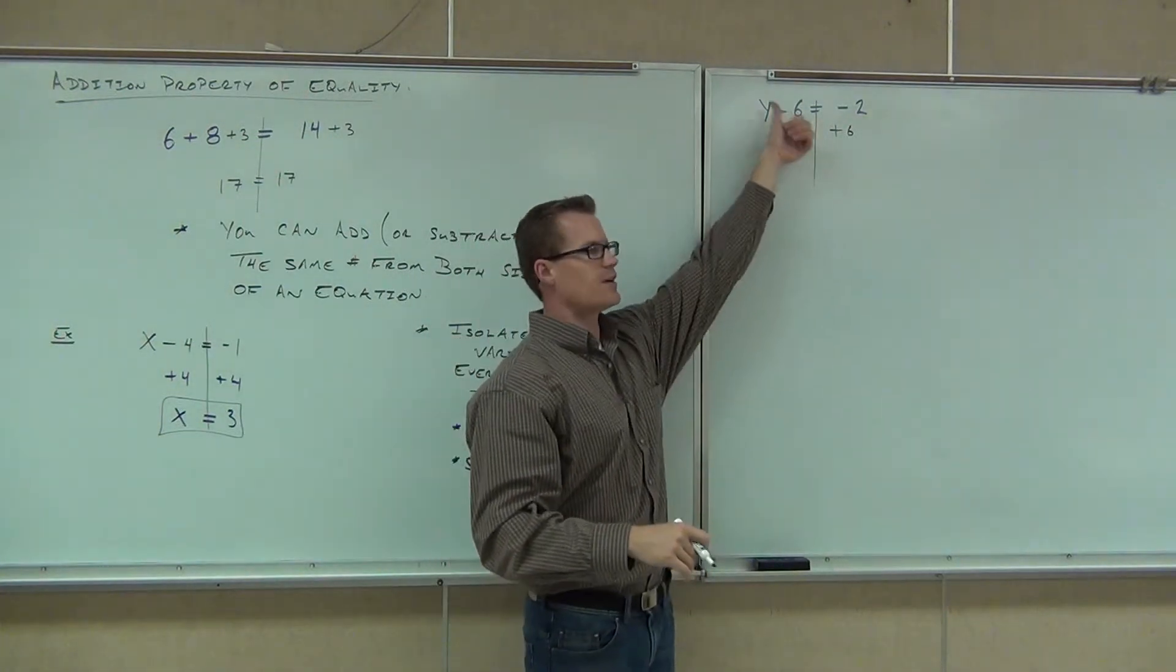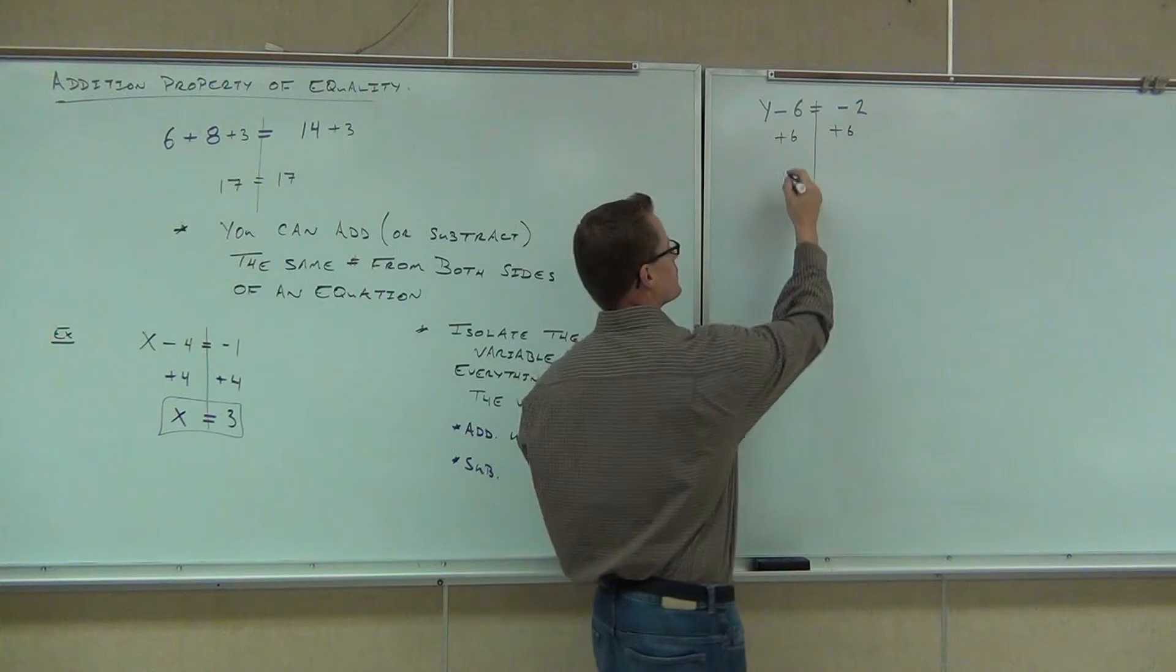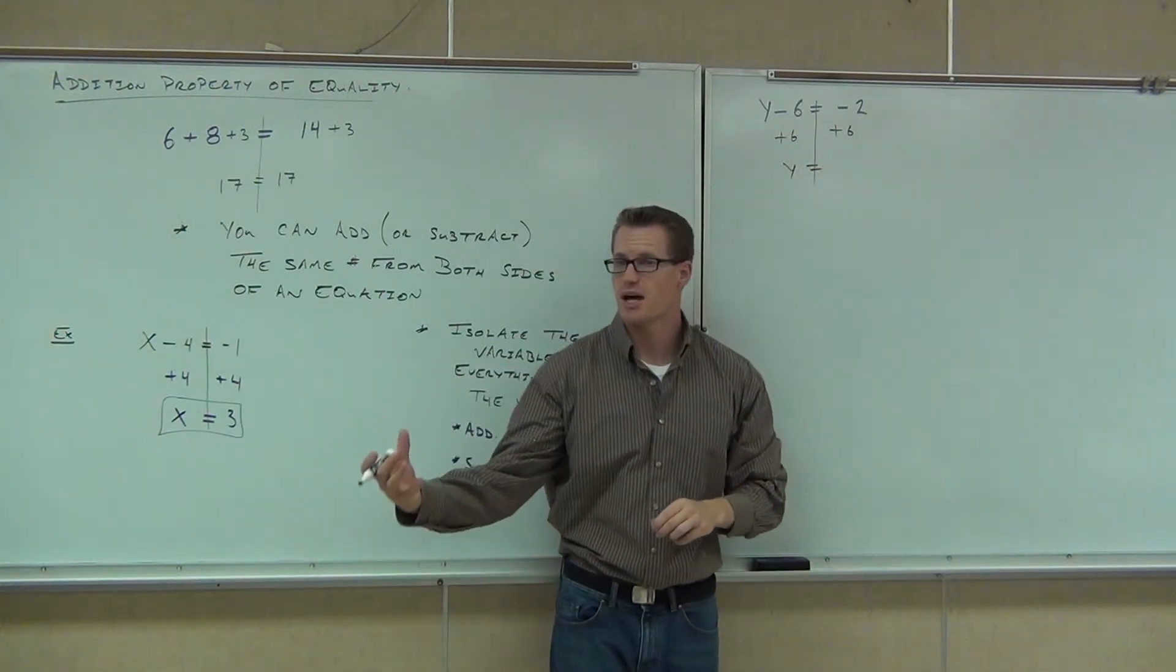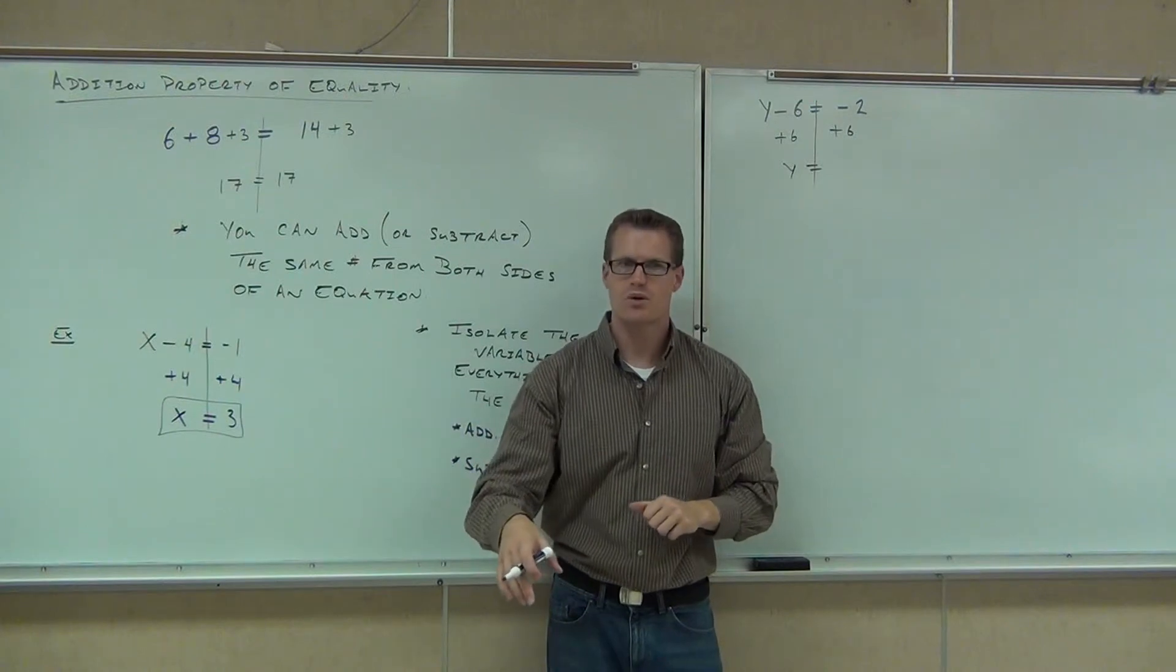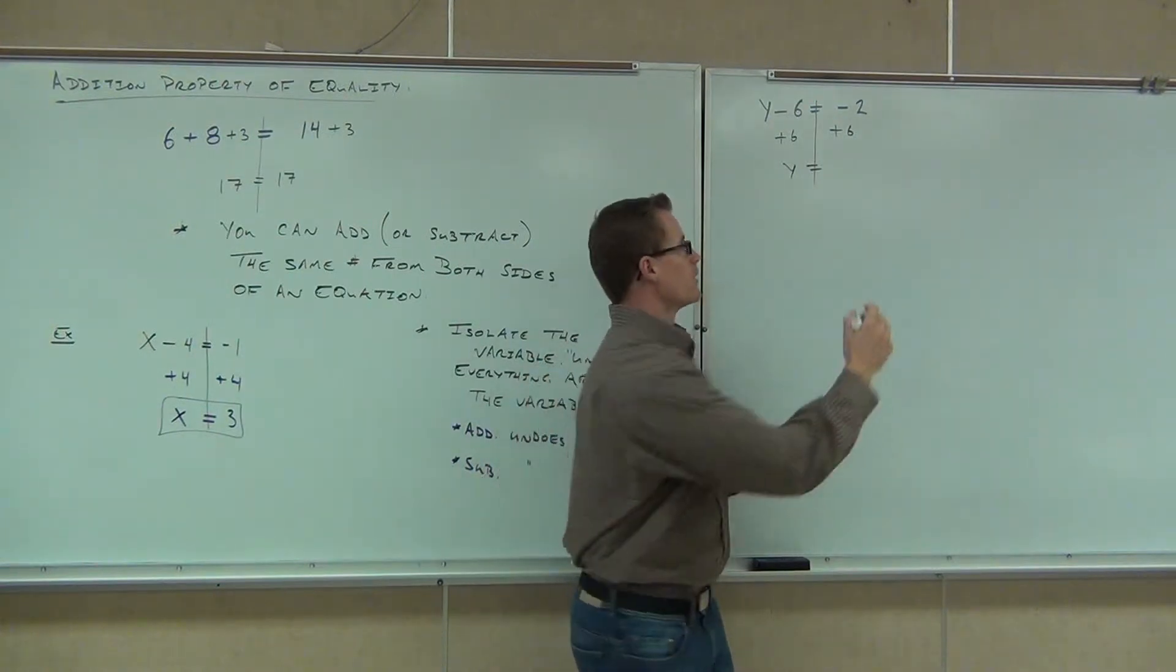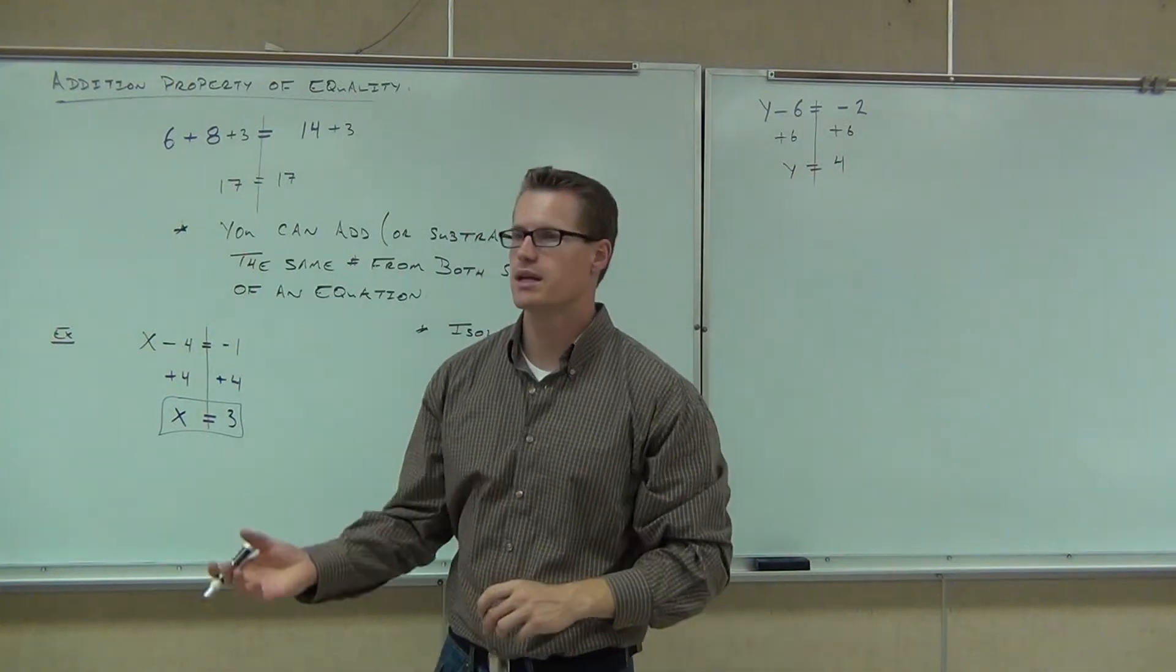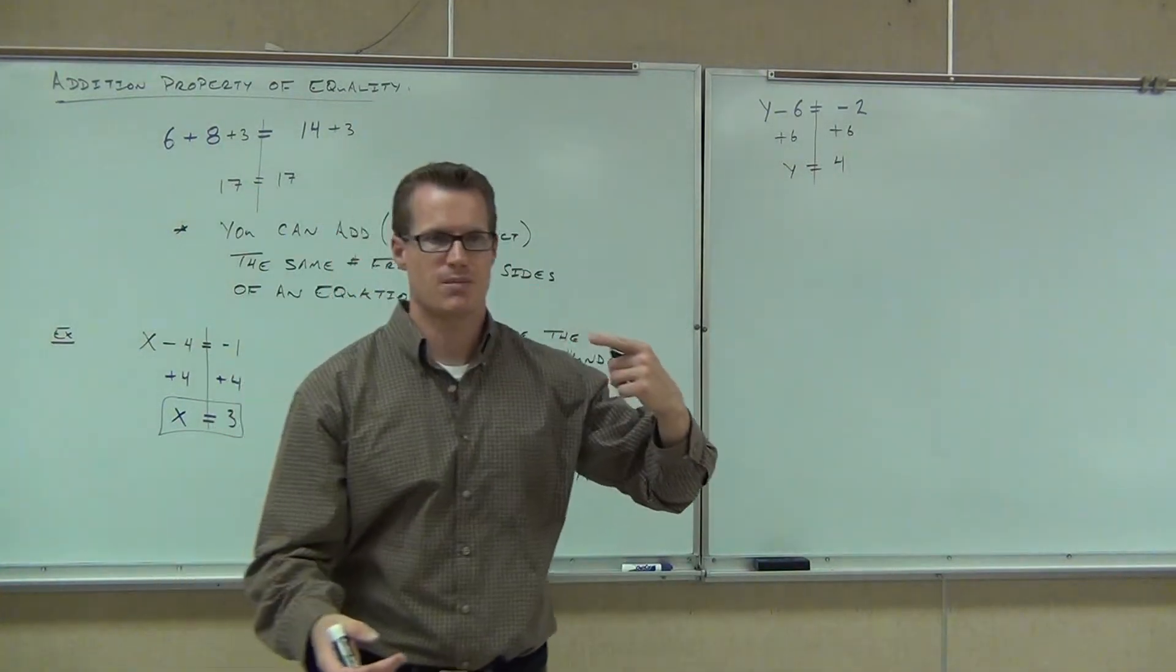On the left-hand side, what are we going to be left with, folks? Y. Perfect. On the right-hand side, we can use addition rules. They have different signs. Sign with a bigger number. You're going to get how much? Four. Again, could you check your work? Yes. Plug that in there. Four minus six is certainly negative two. So at least we should be checking that mentally.